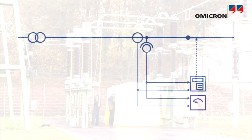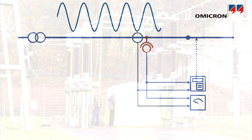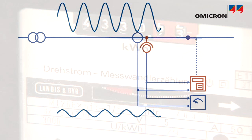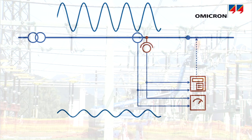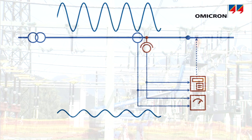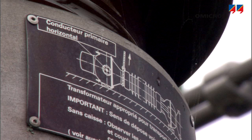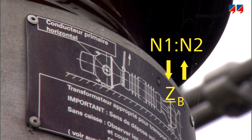Potential or voltage transformers, or VTs, have to transform primary voltages into levels that can be applied to control, protection, and metering systems, with sufficient accuracy and correct polarity. Thus, during the commissioning or refurbishment of a substation, testing a VT includes checking its ratio and polarity, and measuring its burden.